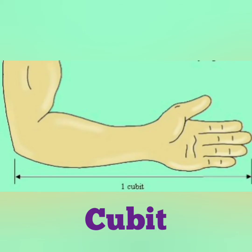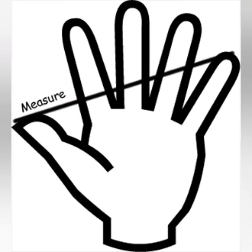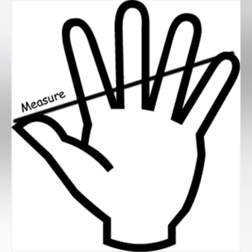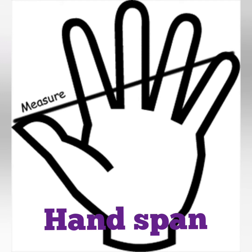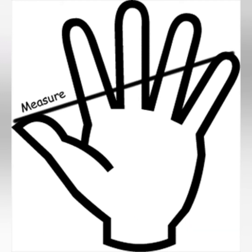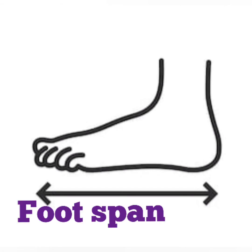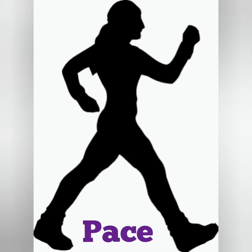The length from the tip of the middle finger to the elbow is called cubit. You can see one cubit measure on the screen. The length from the thumb to the little finger is called span, or hand span. The measure from the longest toe to the heel is called foot span. The length of one step while walking is called pace.